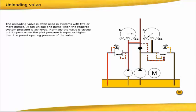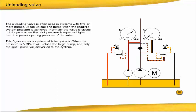Normally the valve is closed, but it opens when the pilot pressure is equal or higher than the preset opening pressure of the valve. This figure shows a system with two pumps. When the pressure is 6 megapascals, it will unload the large pump, and only the small pump will deliver oil to the system. Flow direction is from A to B.